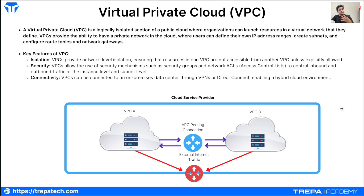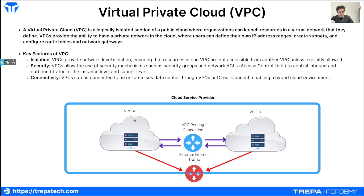VPCs allow peering between geographically dispersed regions and zones in the cloud. They provide isolation and better security by enabling you to apply ACLs or network security groups to those VPCs. You then deploy resources inside those VPCs. For example, imagine a region where you want to deploy a VM.